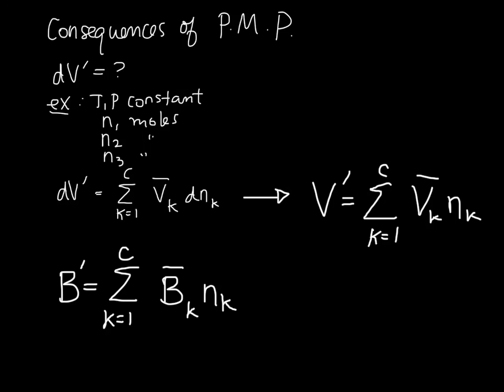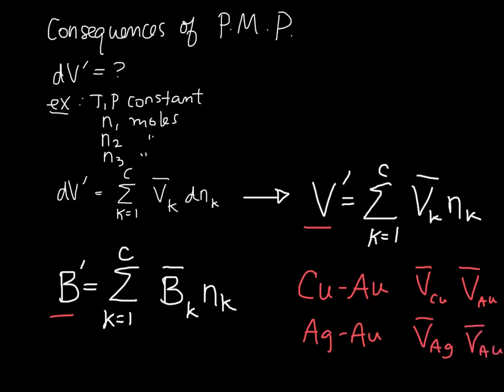And, this same expression can be written for any extensive property using our generic B. So, any extensive property can be written as the weighted sum for all the species of that partial molar property times the number of moles that are there. So, the last thing that I want to point out here before we end is that any partial molar property is system specific. So, let's say that we have a copper-gold alloy. There will be some partial molar volume of copper and some partial molar volume of gold in this particular solution, but they are specific to this binary pair. If I instead have a silver-gold alloy, I'll have some partial molar volume of silver and partial molar volume of gold. But, these two things are not equal to each other because it depends on the system that we're looking at. So, that's an overview of how partial molar properties are defined.